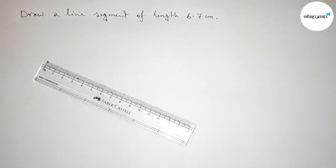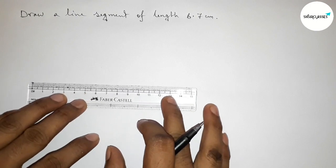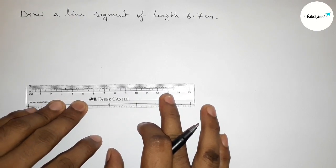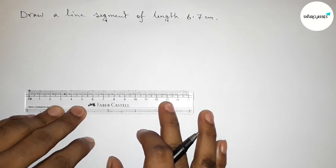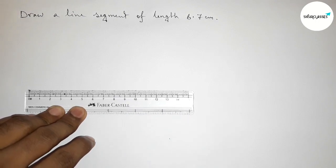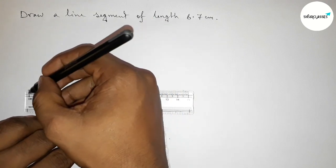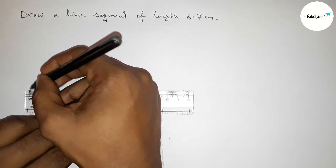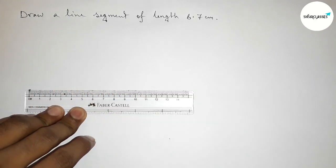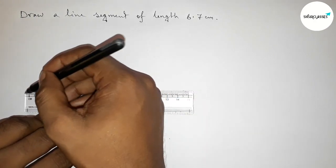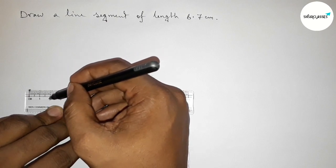First, putting the scale here by this way perfectly, then measuring the length 6.7 centimeter. So first marking here the starting zero, so this is starting zero centimeter. Now counting, so this is 0, 1 centimeter, 2 centimeter, 3 centimeter, 4 centimeter.